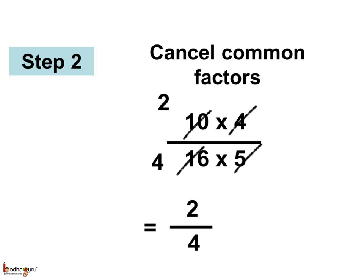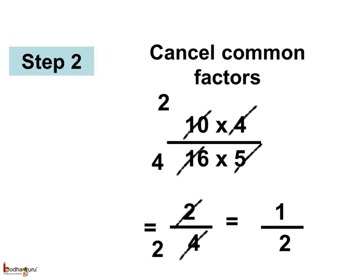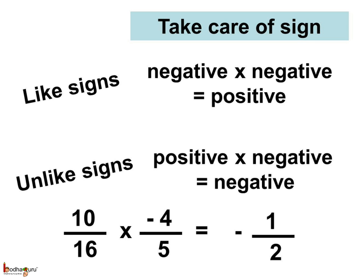And what do we get? We get 2 by 4. And lastly, take care of the sign. Product of rational numbers with like or same signs would be a positive rational number. And product of rational numbers with unlike or different signs would be a negative rational number. As the signs are different here, the product would be a negative rational number, that is, minus 1 by 2.